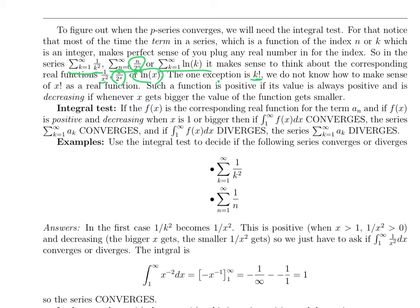Once you write it as a real function, you can graph it. So 1 over k squared, its graph looks like 1 over x squared. 1 over n, its graph looks like 1 over x.